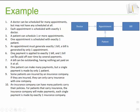Looking at number six: one payment is applied to one bill. So now we know we've got another entity — payment. A bill can be paid off over several payments, meaning that it's optional; we might not have made a payment yet, but we can make many payments. Step number seven: a bill can be outstanding having nothing yet paid on it, which just confirms that it's optional.